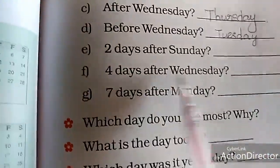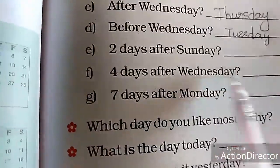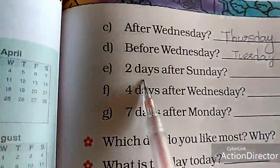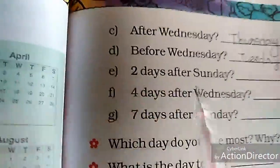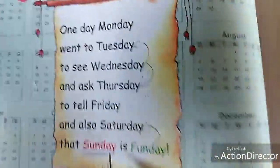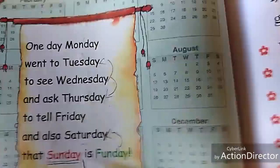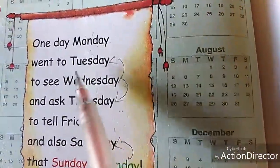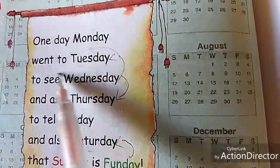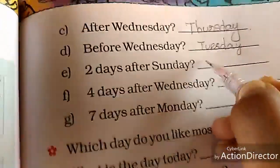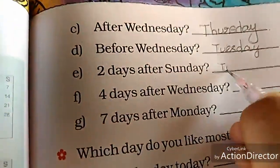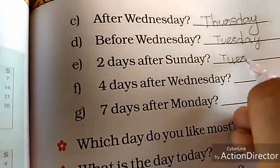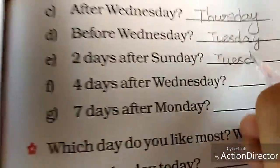Two days after Sunday — see, first day is Monday, and second day is Tuesday. So here you write Tuesday.